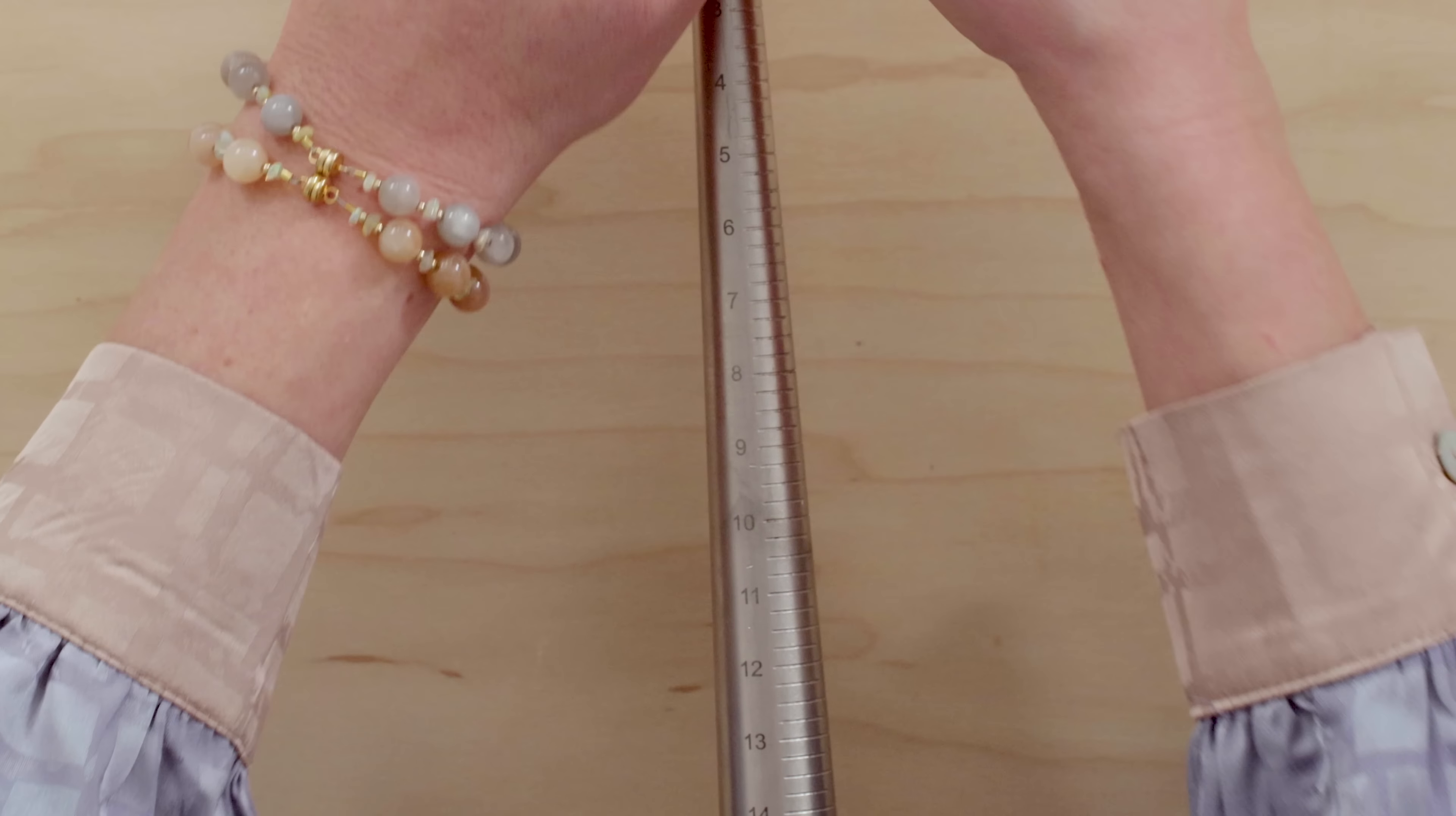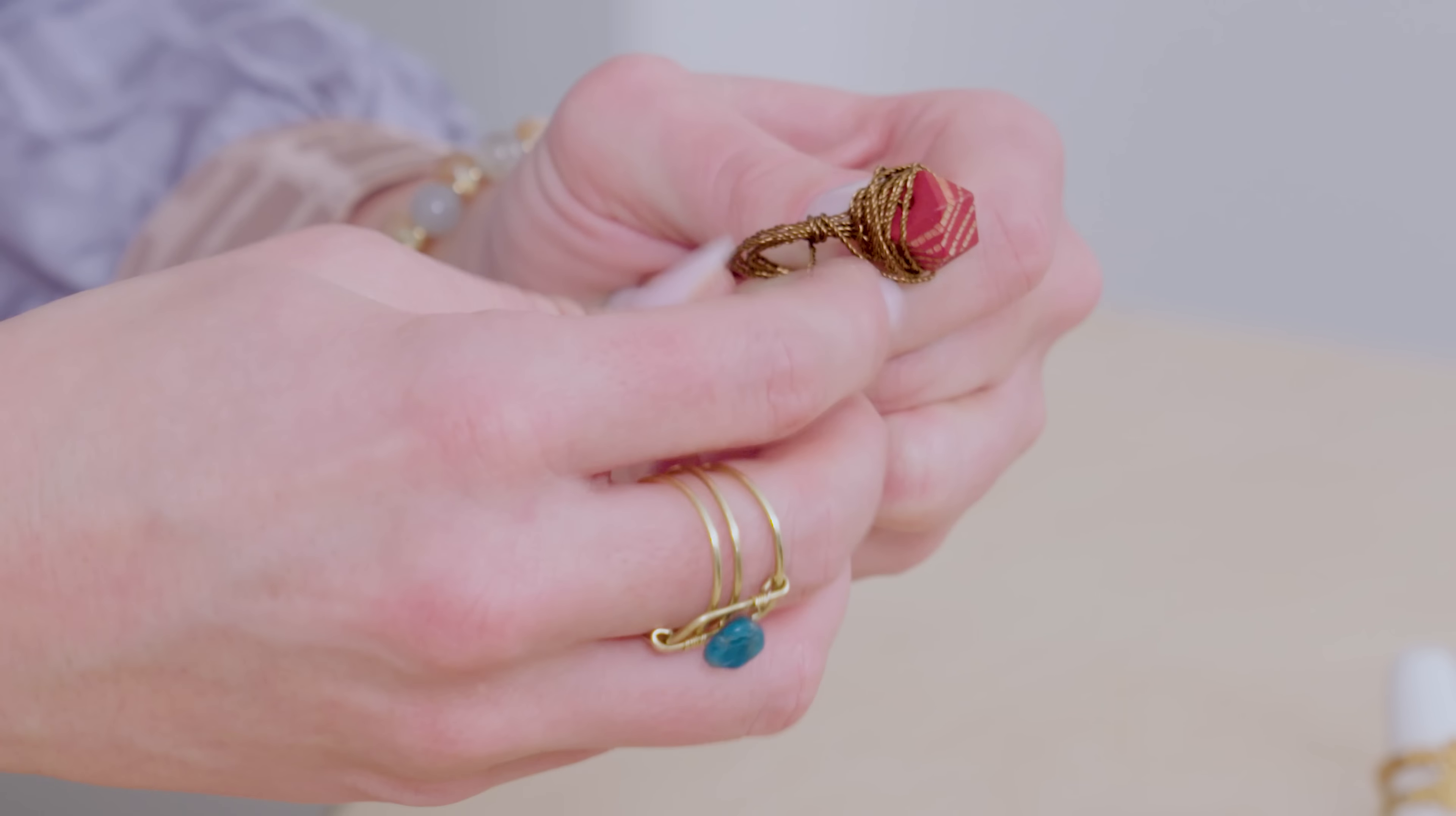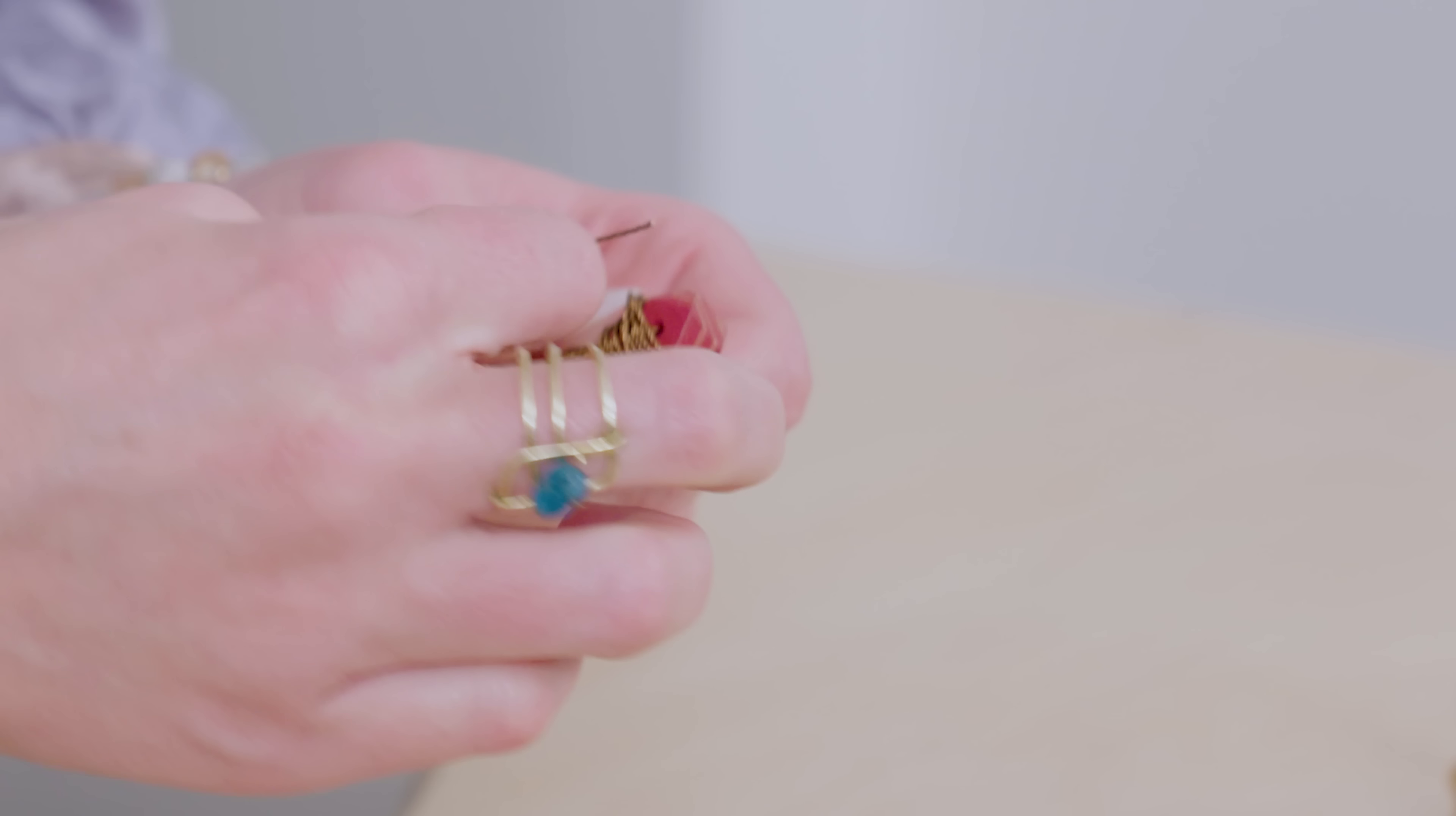Okay and then when you're happy with your wraps you're going to slide it off your mandrel carefully keeping everything together. And then we're going to do a little coil on the side like we did before. Just do three or four little wraps. And you can really see the beautiful texture that this wire gives your piece. Kind of gives it a vintage antique look in my opinion. So beautiful.